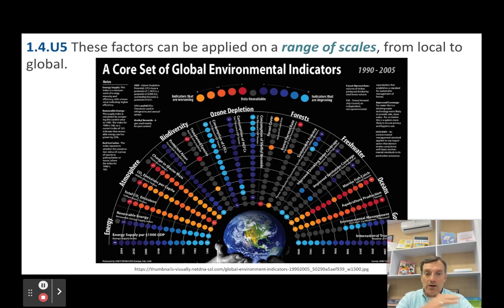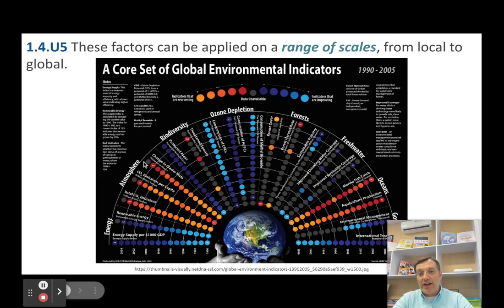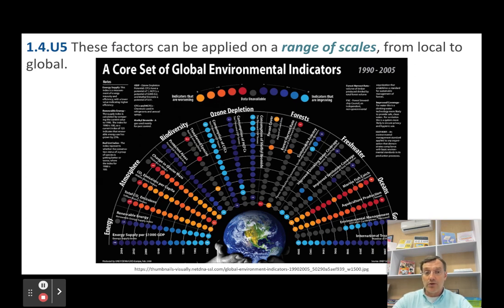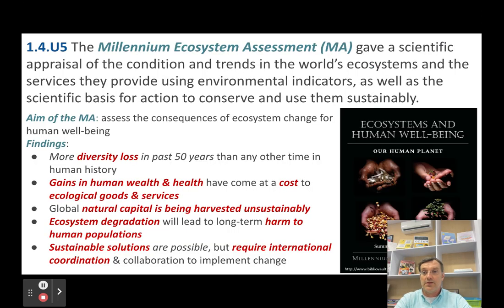All of those environmental indicators — biodiversity, pollution, populations, and climate — we can apply on a global scale. We can also apply them on a very narrow basis at a local scale.